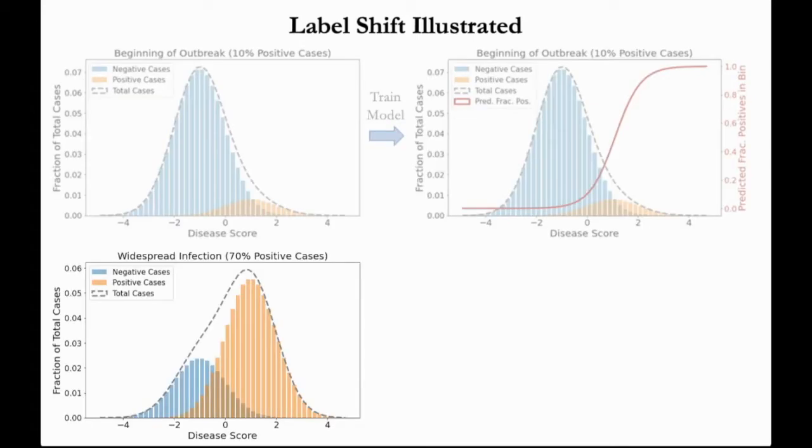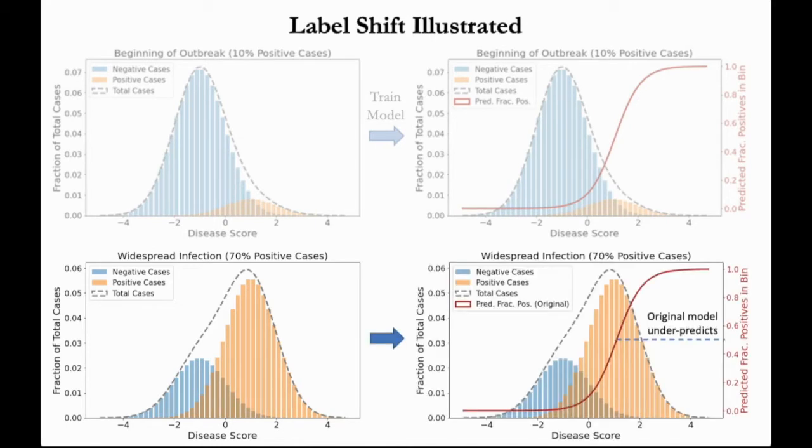Now let's fast forward several months when the disease has become more widespread. Now 70% of patients have the disease. In this scenario, if we were to use the predictive probabilities from our original model, we would systematically underpredict the probability that someone has the disease. Ideally, we want to update our probability predictions to account for the fact that 70% of patients rather than 10% now have the disease.